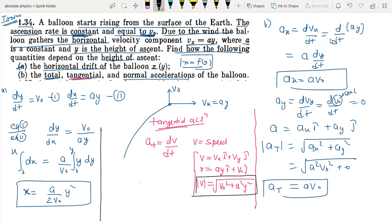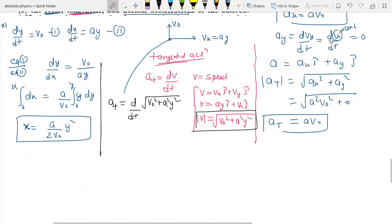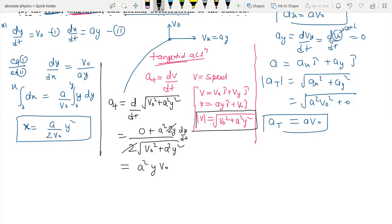If we differentiate the speed, tangential acceleration at equals d by dt of square root of v0 square plus a square y square. Using the chain rule, this equals a square y v0 divided by square root of v0 square plus a square y square. This is tangential acceleration as a function of y.